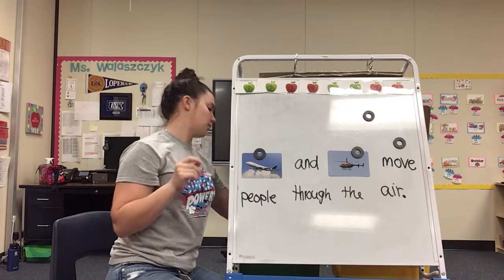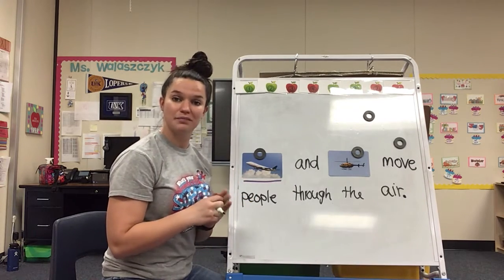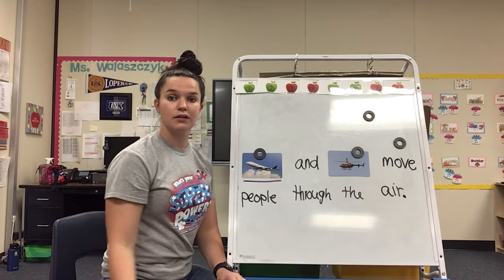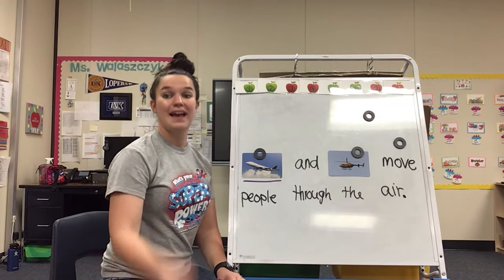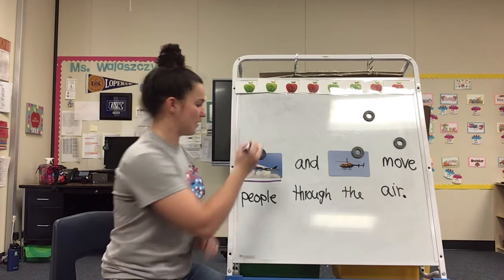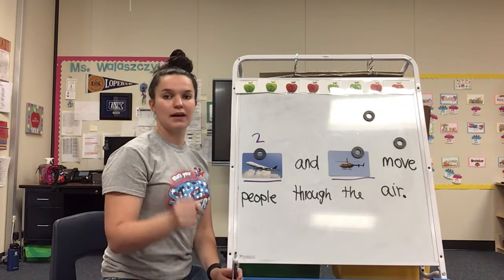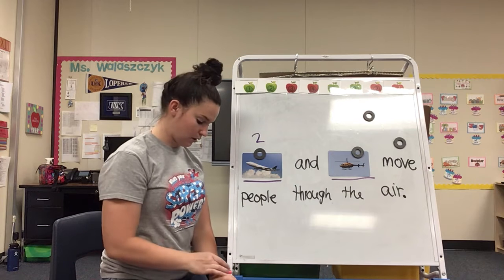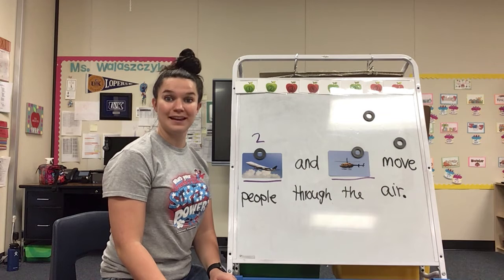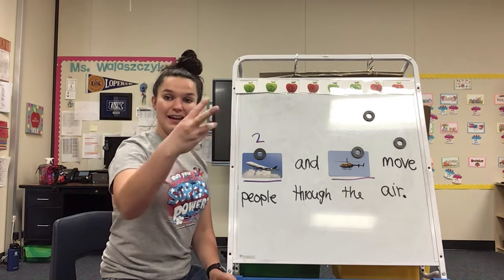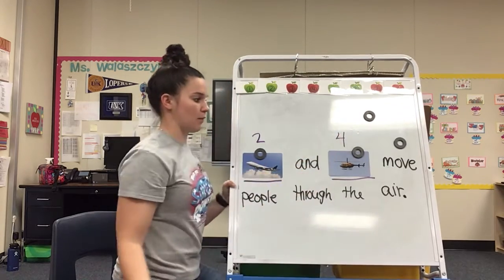So let's go ahead and count some syllables. Our first word is 'airplane.' Can you say airplane? Get your rock ready. Airplane. Ready, go. How many? Airplane — two syllables. Say 'helicopter.' Get your rock ready. Helicopter. Ready, go. How many? Hel-i-cop-ter — four syllables. Four syllables, that's a big word.